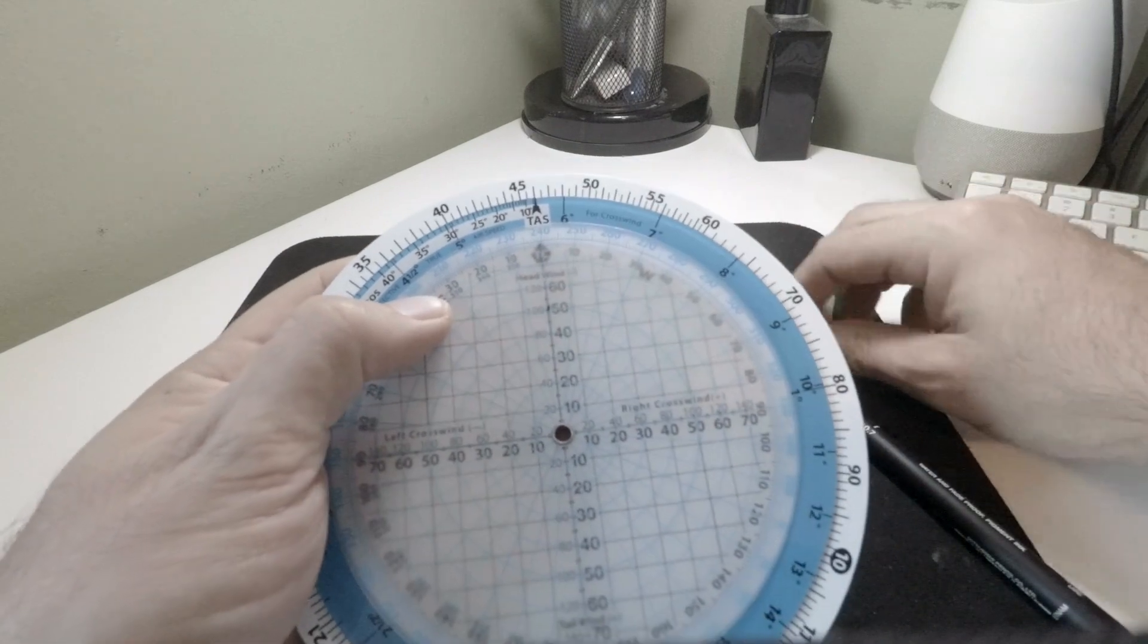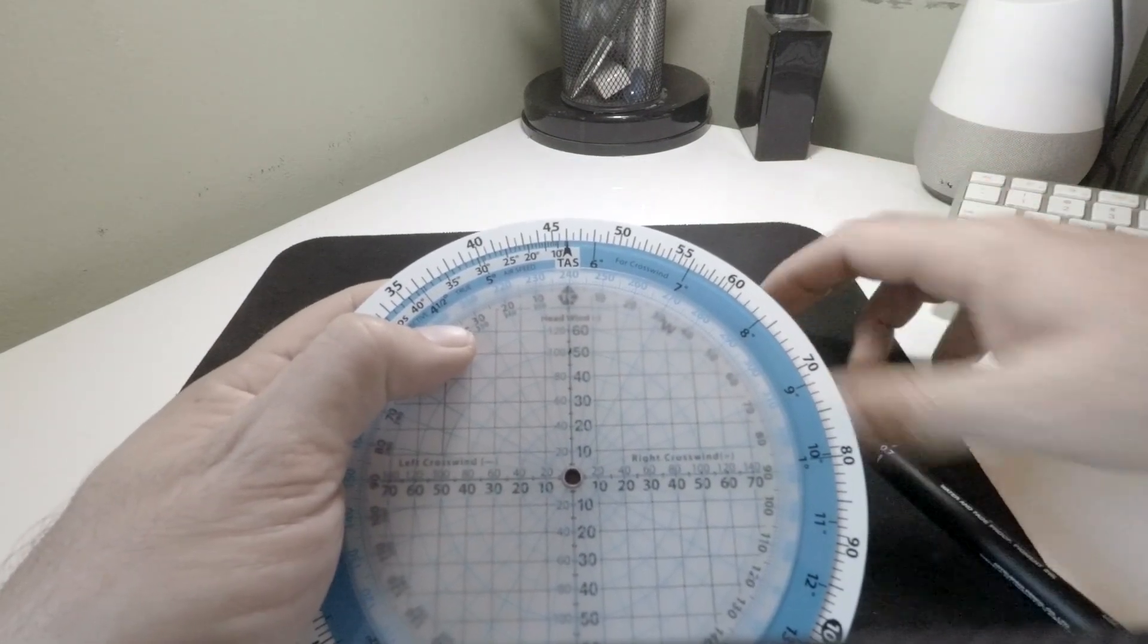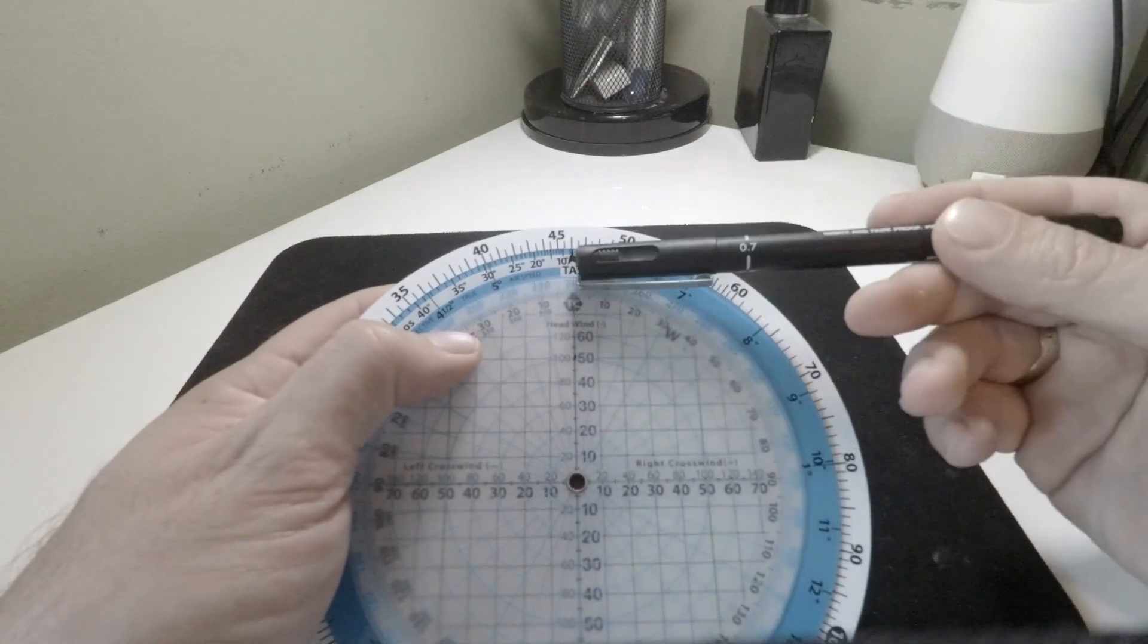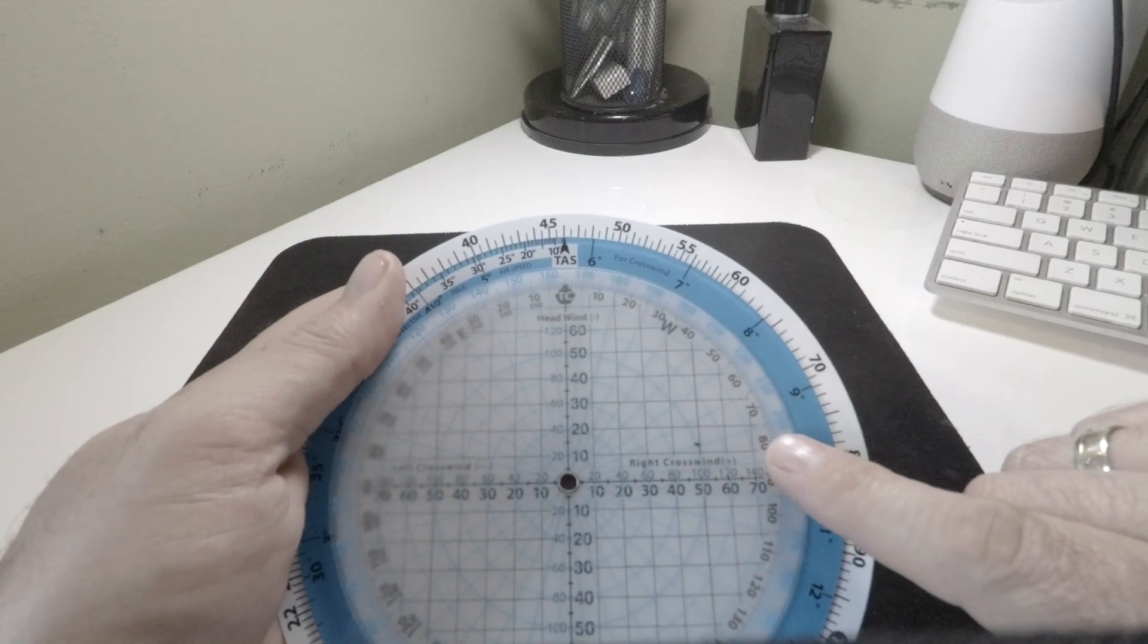In this case, I'm using the larger scale, the smaller numbers, so just take note which side you're on. So we've got 240 at 100 knots, and now we turn around to our track of 165.